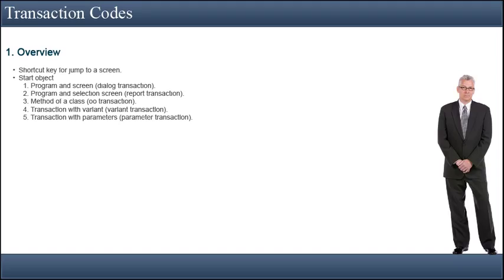In the Start Object block you have 5 radio buttons. If the program is a dialog program, click on the first radio button: Program and Screen. If the program is a report program, click on the second radio button: Program and Selection Screen. If you are creating the transaction for object-oriented use, click on the third radio button: Method of Class.